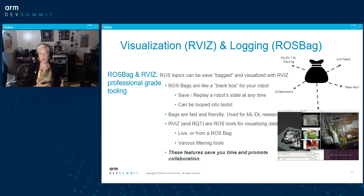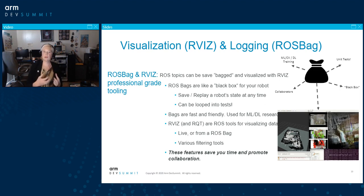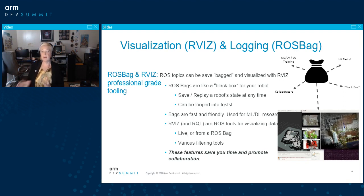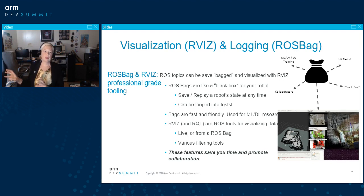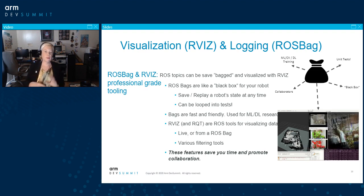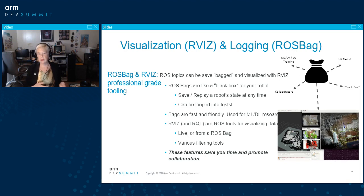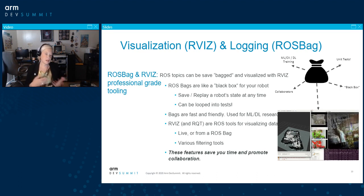ROS topics can be saved into something called a bag, which is just a serialization format, and then visualized with a tool called RViz. ROS bags are like a black box for your robot — you can save all the data moving through the robot, take it to your desktop, replay it, see what your robot was thinking at any given time, and drop that data into a test. Bags are a really fast and friendly tool for building deep learning and machine learning models, and for moving data between collaborators. Similarly, RViz and RQT are ROS's tools for visualizing data, moving it around, and filtering it.